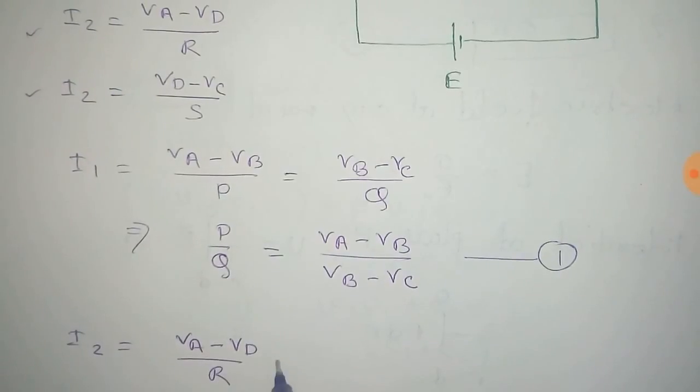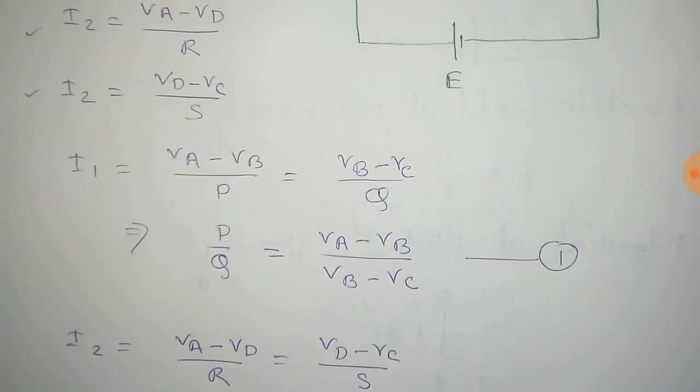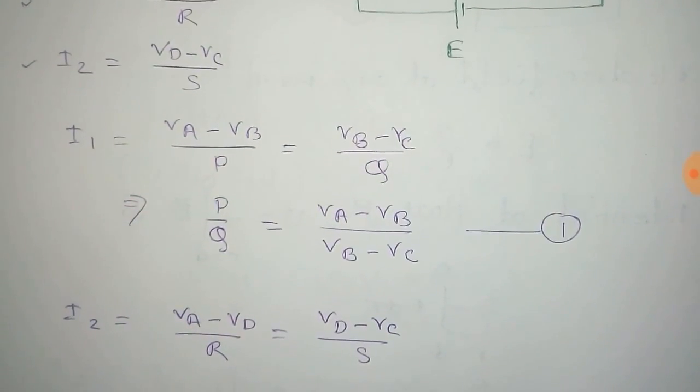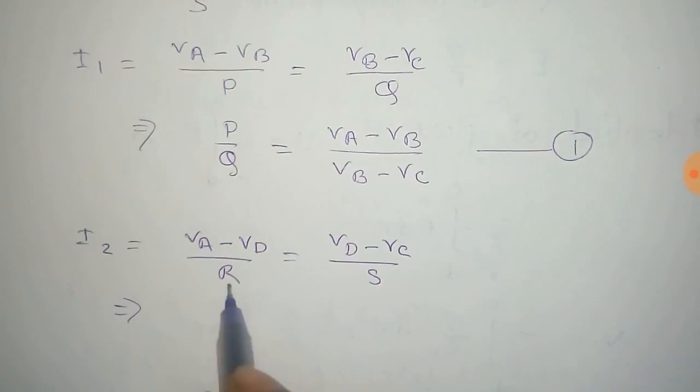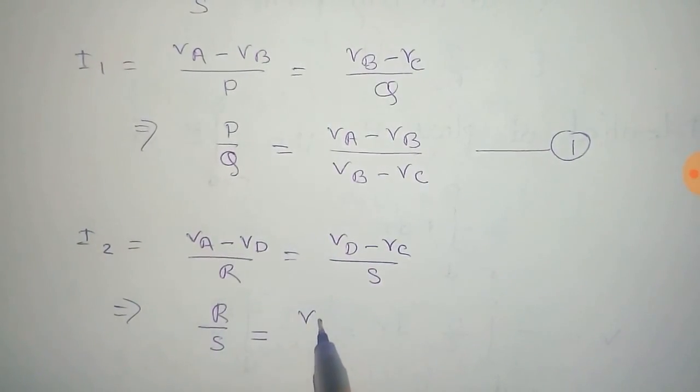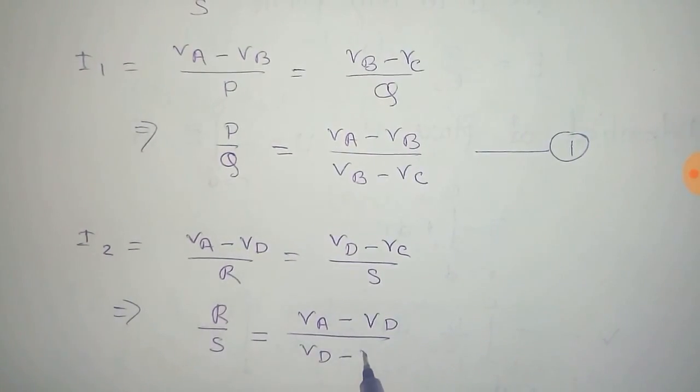VA minus VD by R equals VD minus VC by S. And from this we can write that R by S equals VA minus VD by VD minus VC.